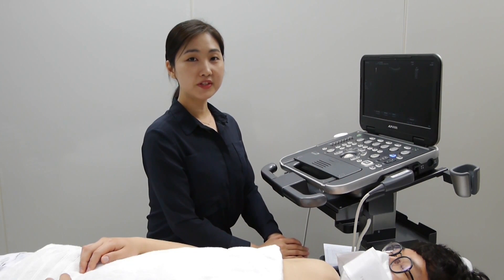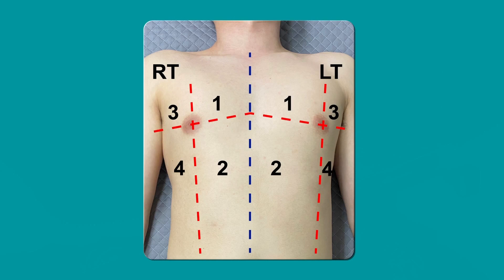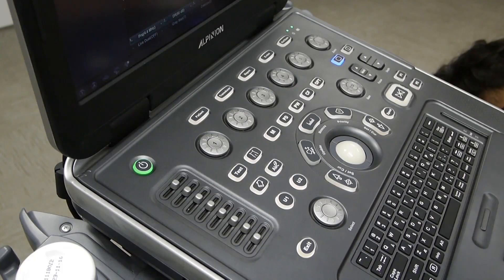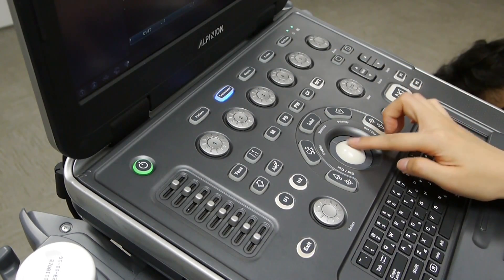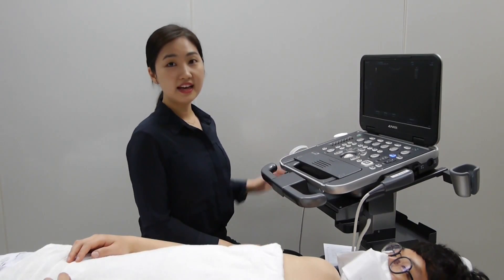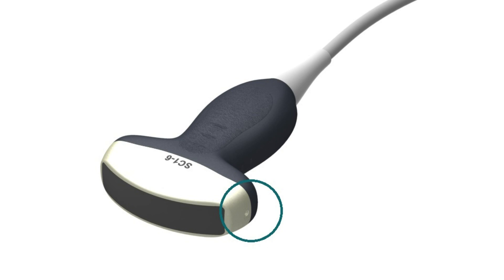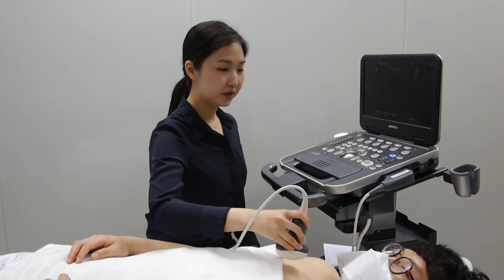Now we are going to start scanning. Before we start, we are going to divide the chest into eight sections — four sections for each side. First, you need to choose your transducer and a preset. With your transducer, you need to know where your marker is. This indicator should be oriented towards the patient's head or the right side.